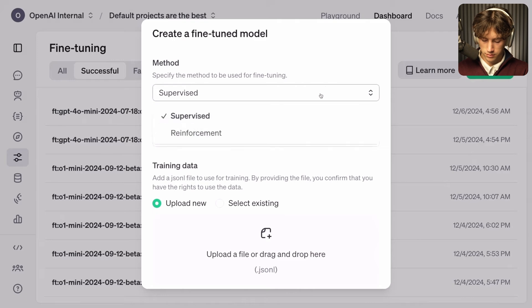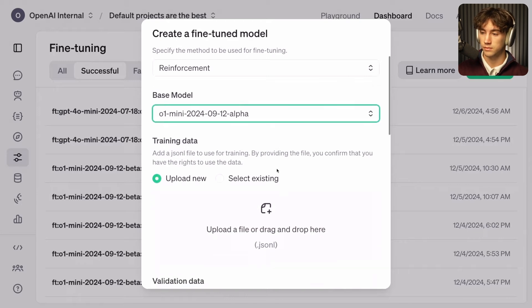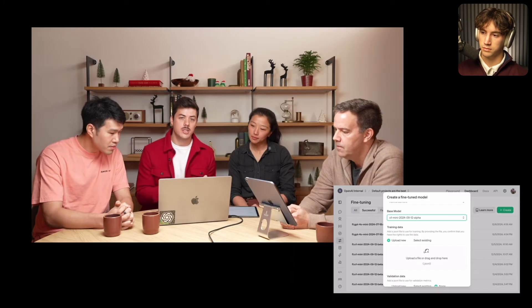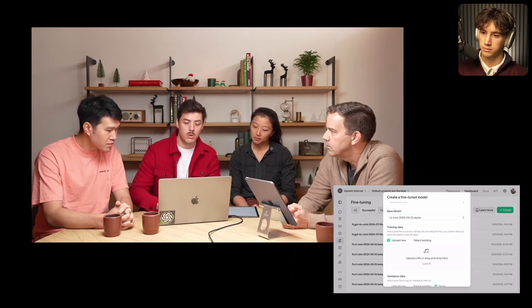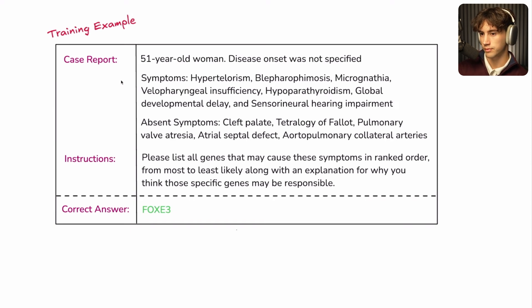We've had supervised fine-tuning for a bit over a year now — but now we're selecting reinforcement fine-tuning, with O1 as the base model. Justin and his colleagues assembled a dataset of about 1,100 examples. Each data point has three important things: the case report — a description of the patient and their symptoms, such as a 51-year-old woman with hypertelorism and hyperparathyroidism — a list of present symptoms, and absent symptoms, which help the model rule out genes that might otherwise be considered responsible.